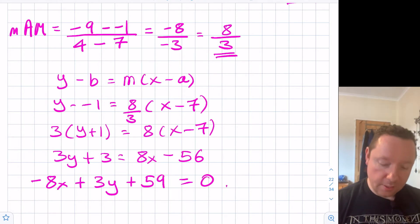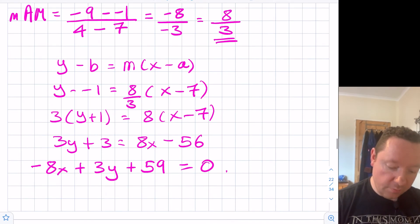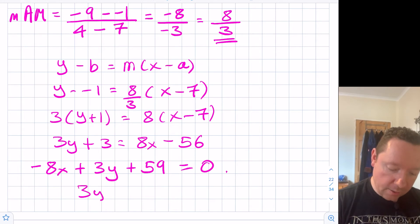Or if you preferred another form you could have say that 3y plus 8x equals -59. That's another option.